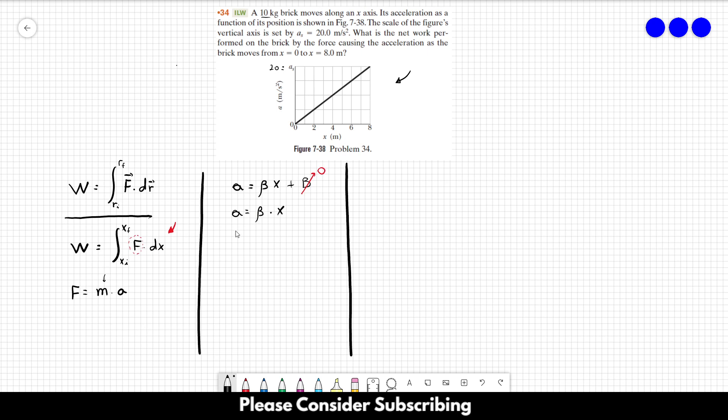One way to do that is divide delta a over delta x, since beta is constant. So delta a over delta x equals beta. We can just take the initial and final position and apply here and find the value of beta. For example, we can take this initial point and this final point over here.